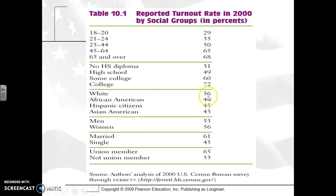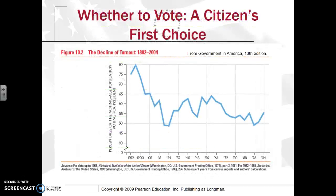In terms of race, whites are most likely to vote, with Hispanics just slightly ahead of African Americans and Asians. Women are more likely to vote than men, just by a small margin. Married people are also more likely to vote compared to single people. And unions, which are very politically active, are also much more likely to vote as opposed to non-union members, as unions tend to be tied to politics and political activity.